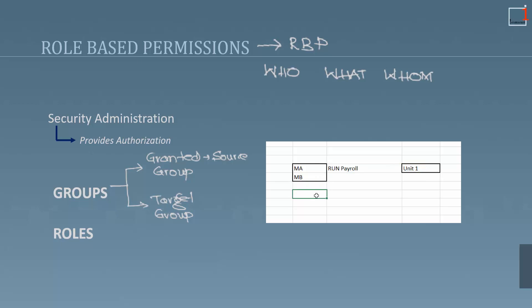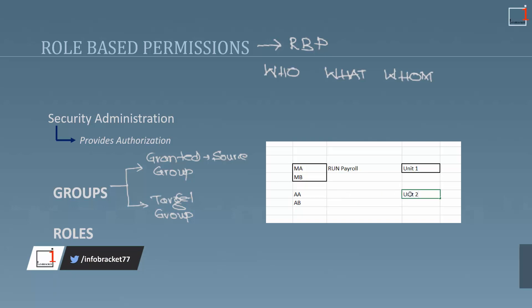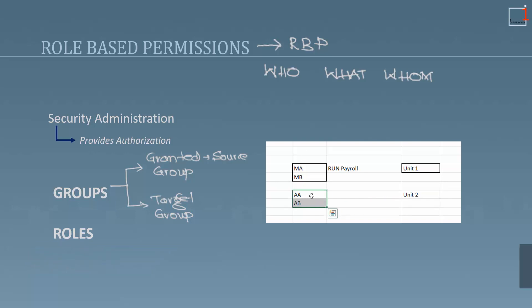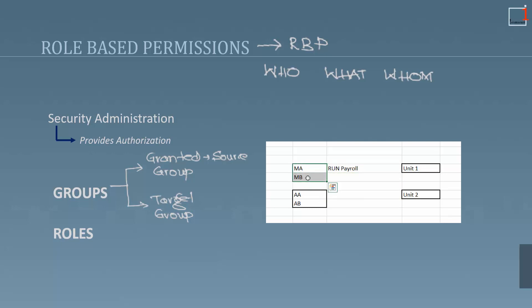If I give you one more example: say there are two other employees, AA and AB, who are responsible to do the payroll of all the employees of unit two of an organization. AA and AB will form one group, which is our granted group, and all the employees of unit two will form the other group, which is our target group. But the role still remains the same — there shall be only one role. The permission of running the payroll is granted to the granted group over the target group.